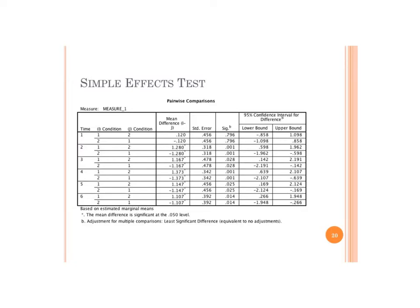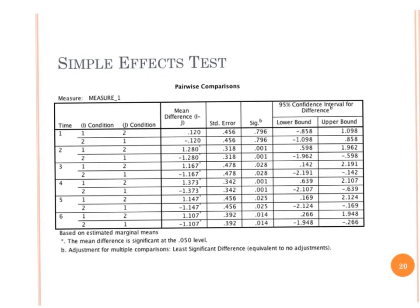For the simple effects test in a repeated measures design, you look at pairwise comparisons, not just the univariate test. At time one (baseline), there was no significant difference between super-maximal and 3RM — as expected from counterbalancing. Immediately after, there was a significant difference, and this continued at two minutes, four minutes, and six minutes. The differential outcome — non-significant at baseline but significant at all other time points — is what drives the significant interaction.